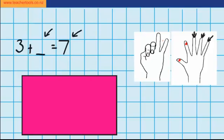and 2 more fingers on this hand. So in total I stretched out 4 fingers. So 3 plus 4 equals 7.